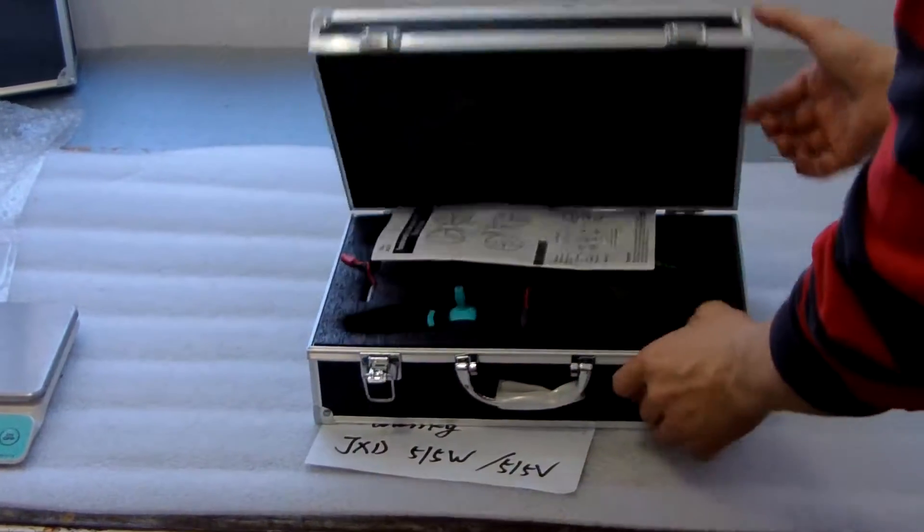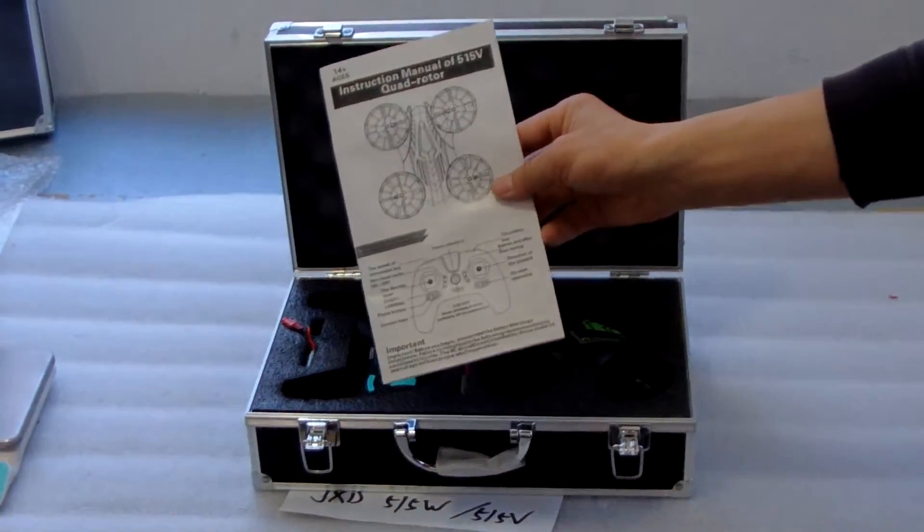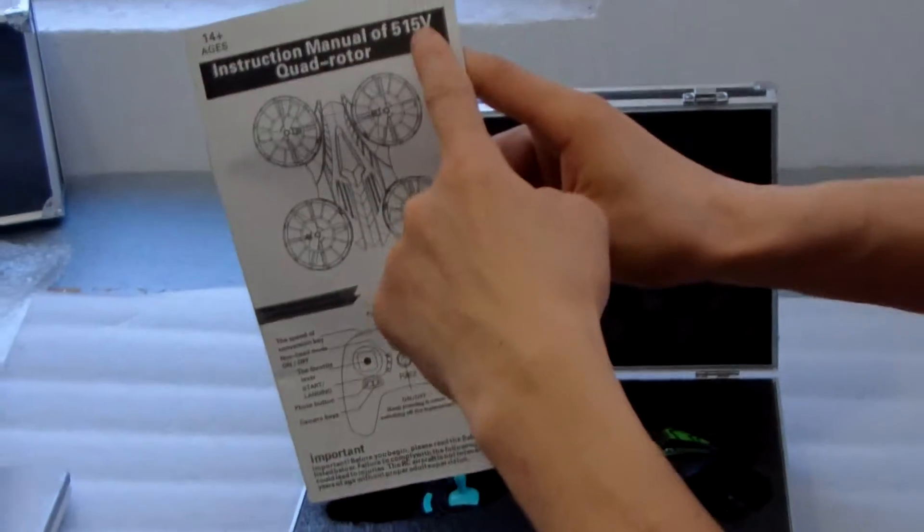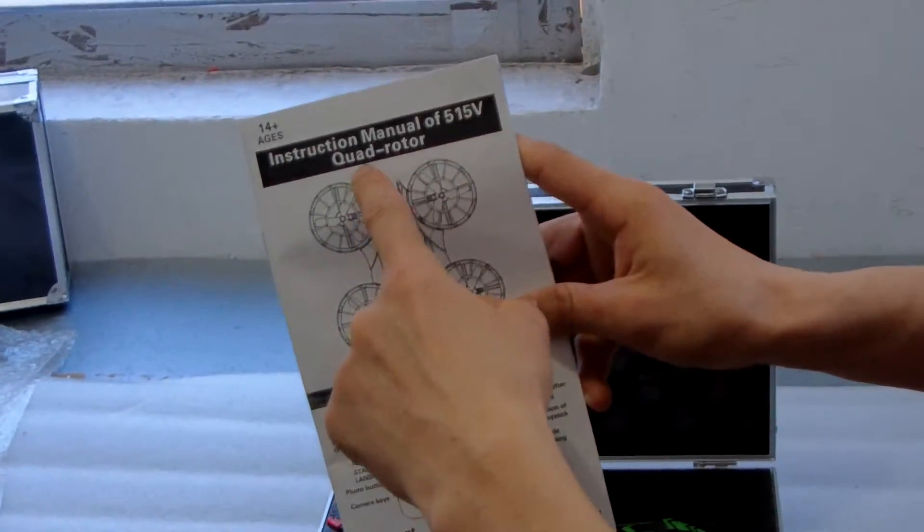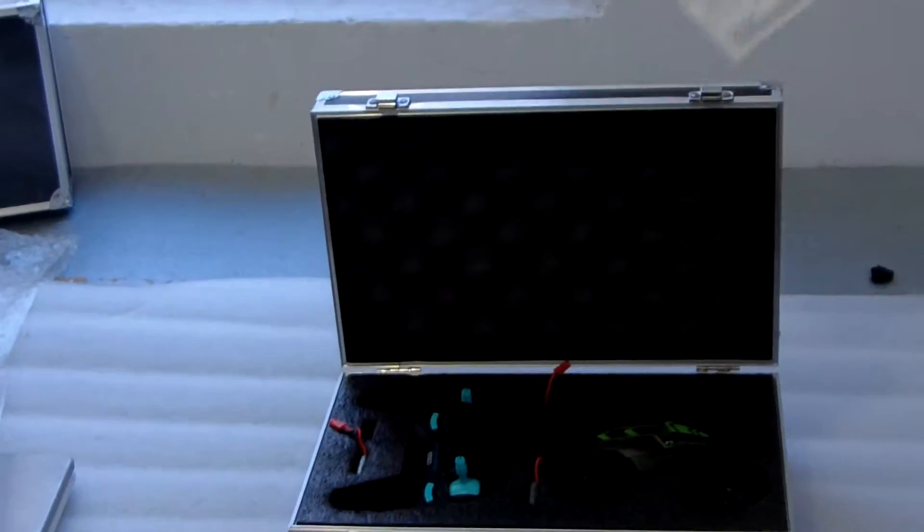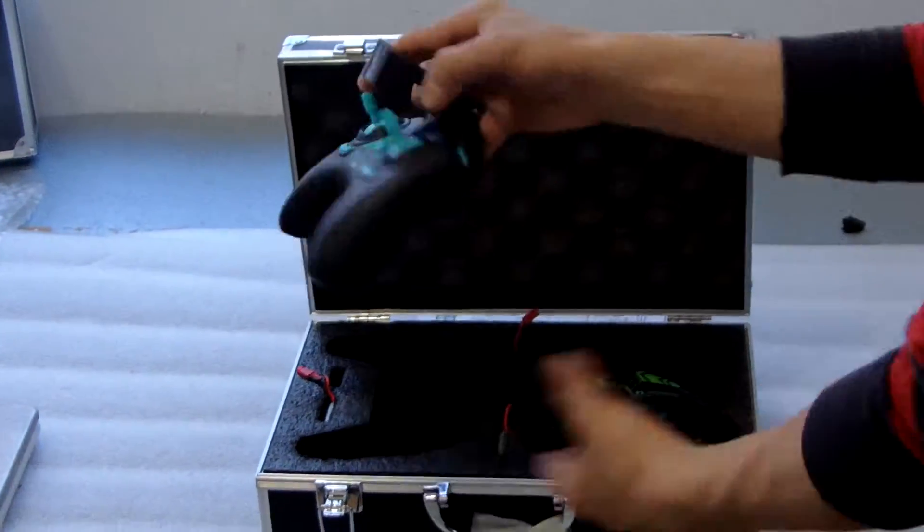Let me see what it is. First, this is the drone, 515V, 515W version. Now open it. This is the remote control.